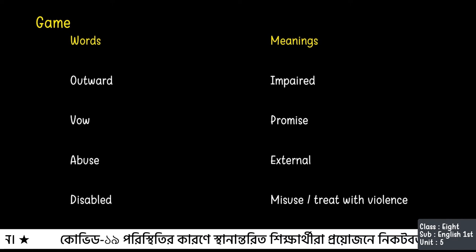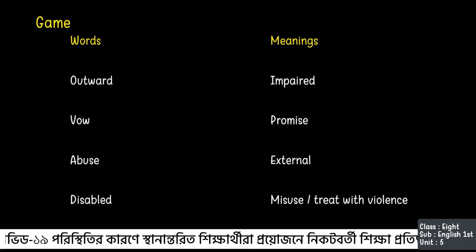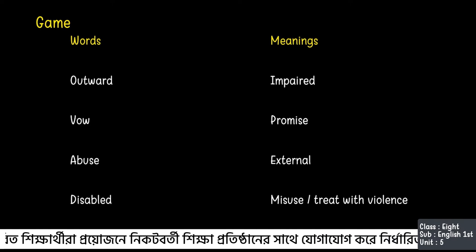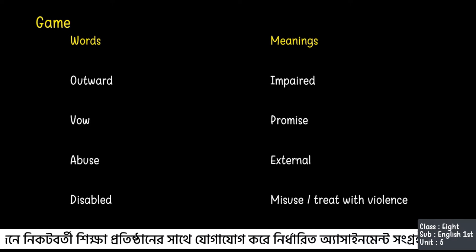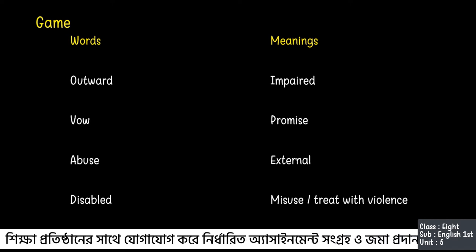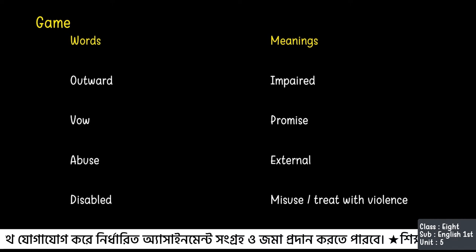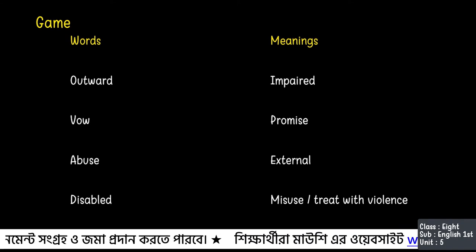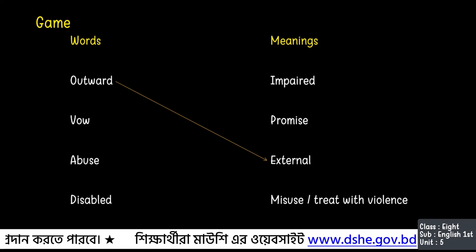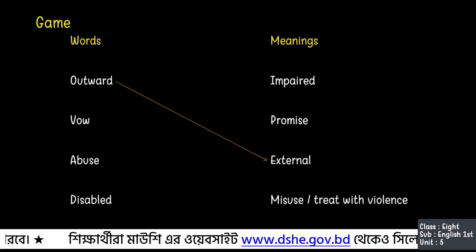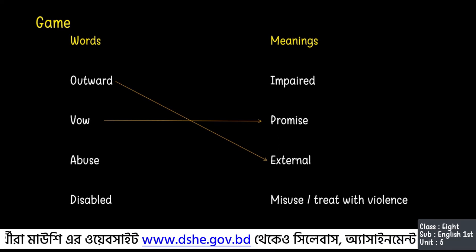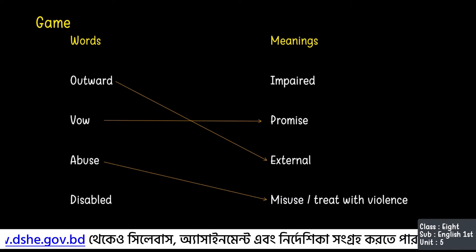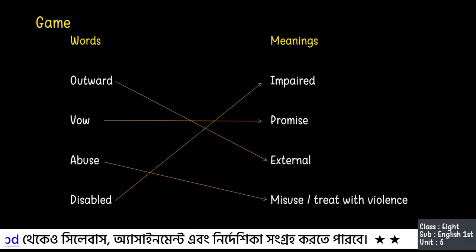Let's see how many you can get right. The words are: outward, vow, abuse, and disabled. The meanings are: impaired, promise, external, misuse, or treat with violence. What will be the answer of outward? Yes — external. You're right. Vow — promise. Abuse — misuse or treat with violence. Disabled — impaired.